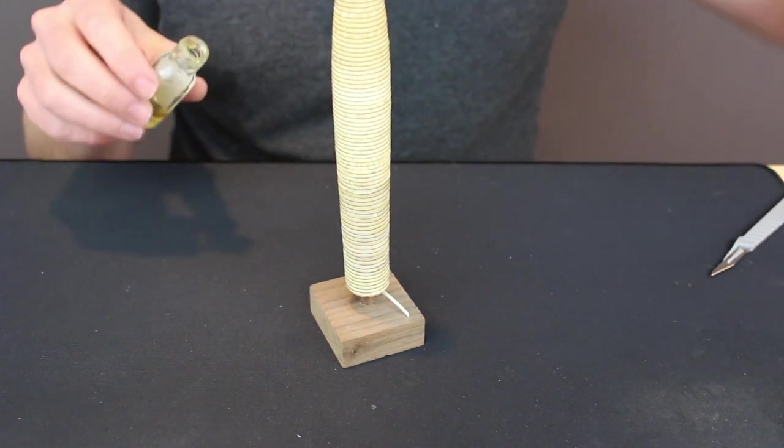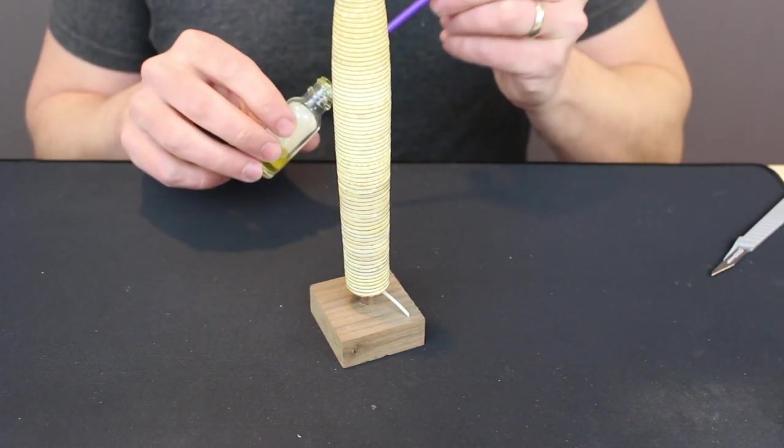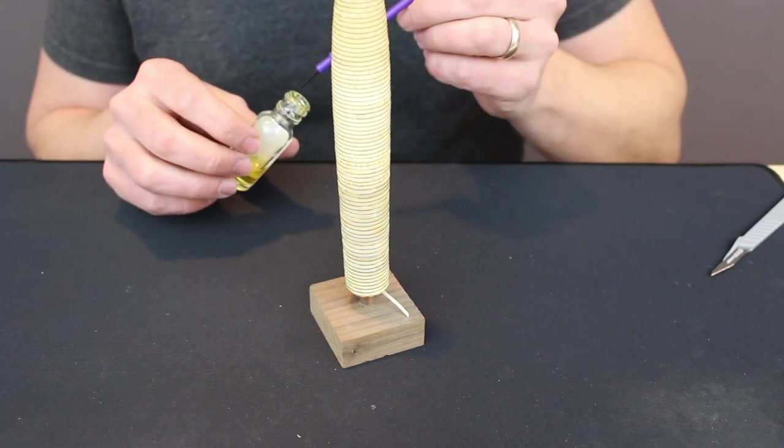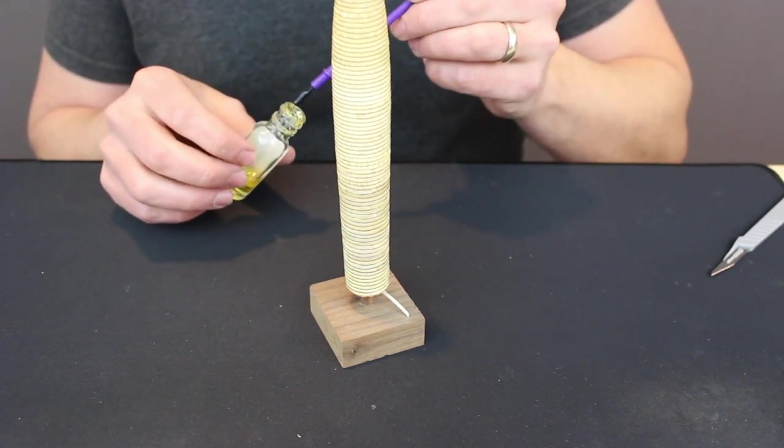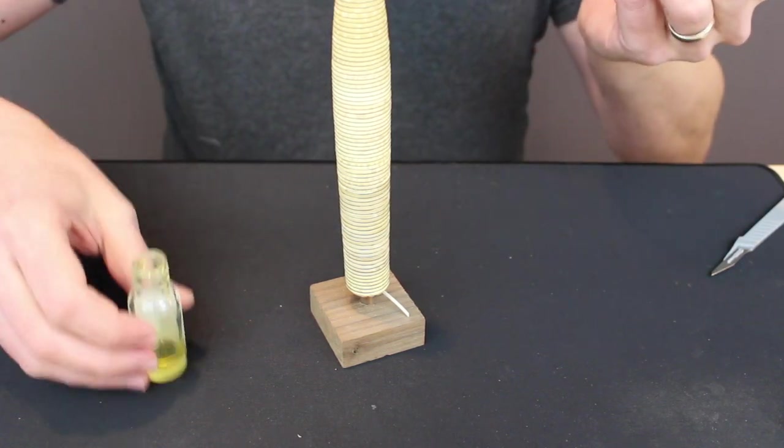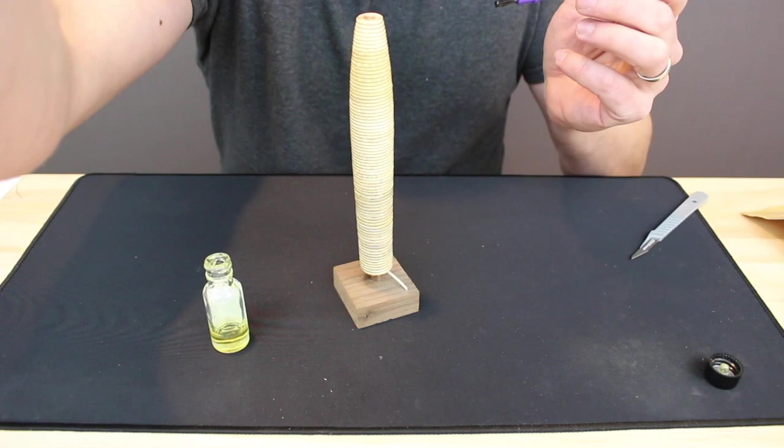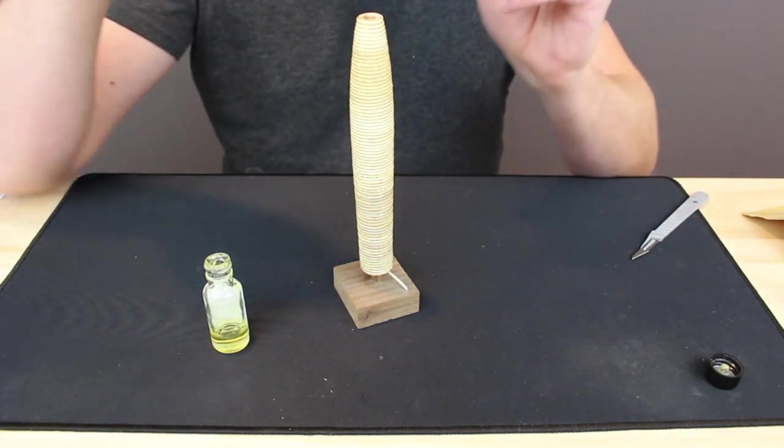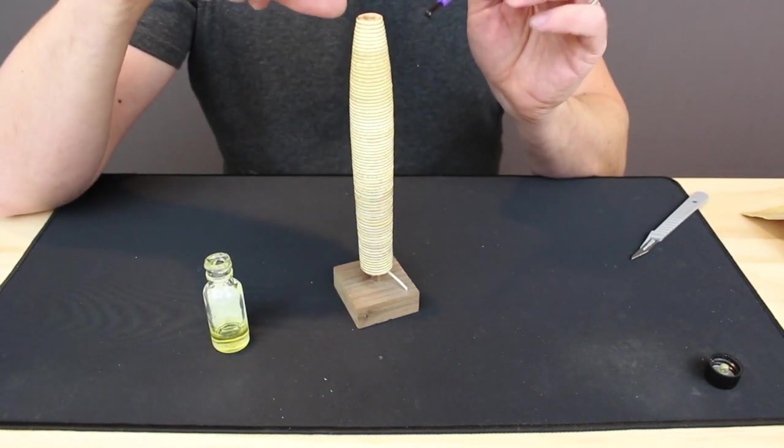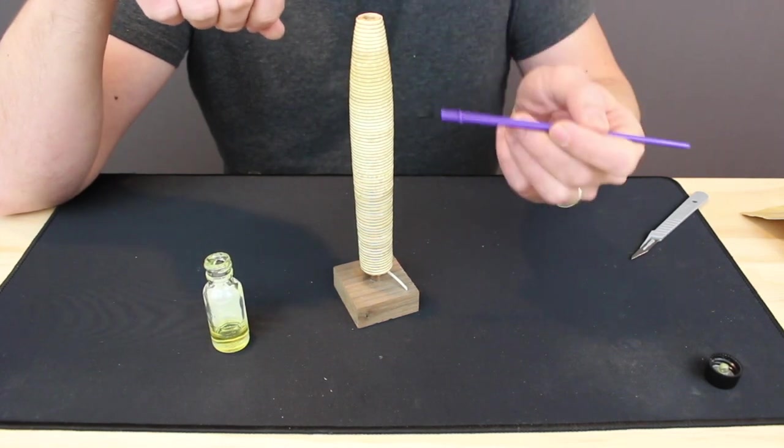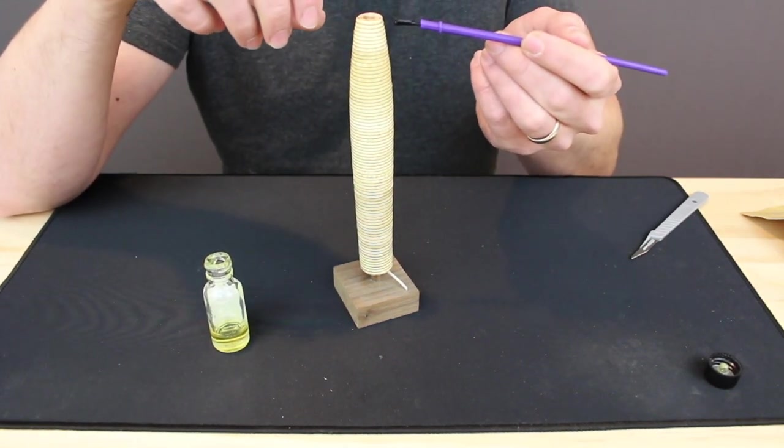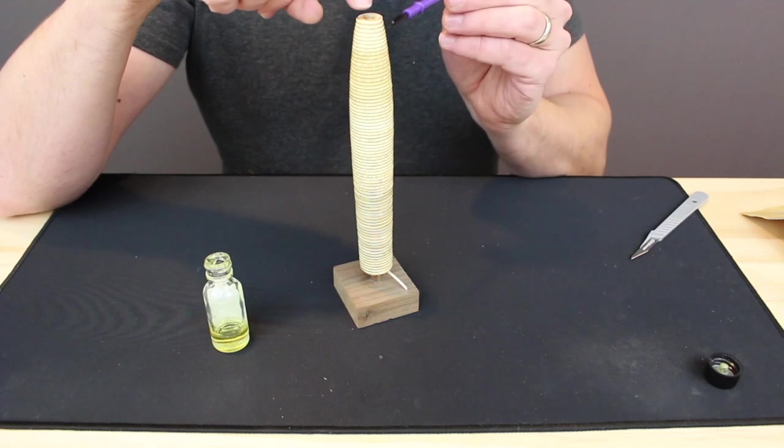For finish, I'm going to use spar varnish. I use it full strength—if you want to cut it, feel free to make it however thick or thin you want. The only trick I recommend is when I get started, for the first coat in particular, I don't brush down on the grip because you can dislodge some of that thread.